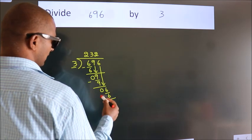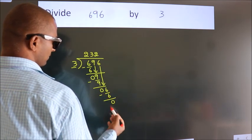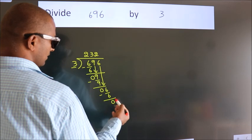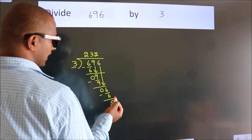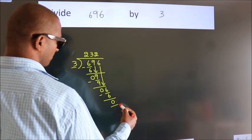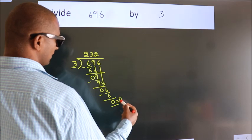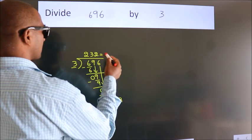Now, we subtract. We get 0. After this, no more numbers to bring it down. So, we stop here. This is our remainder. This is our quotient.